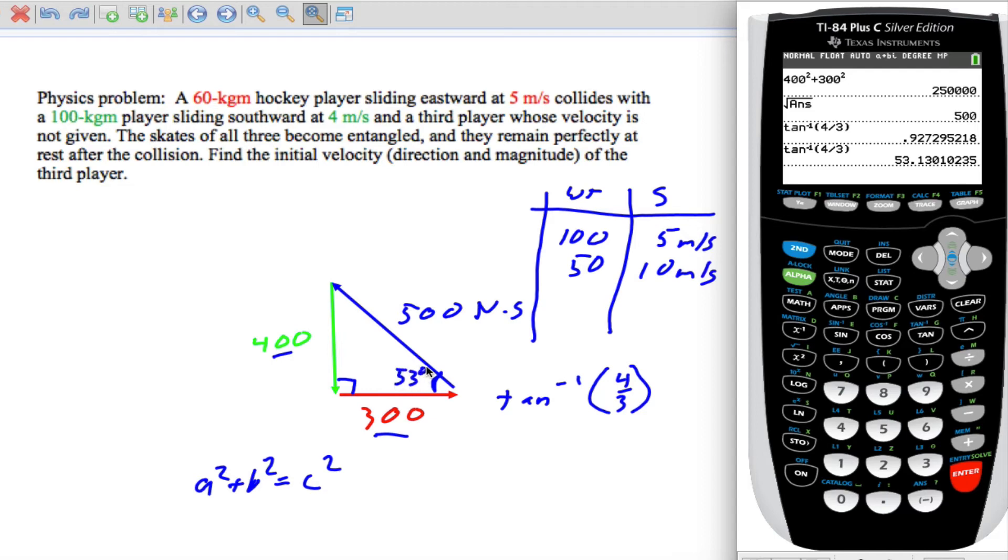So the direction is 53 degrees north of west. So I'll put that over here. Direction is 53 degrees north of west. And the magnitude is 500 newton seconds or 500 kilogram meters per second. So that would be your answer.